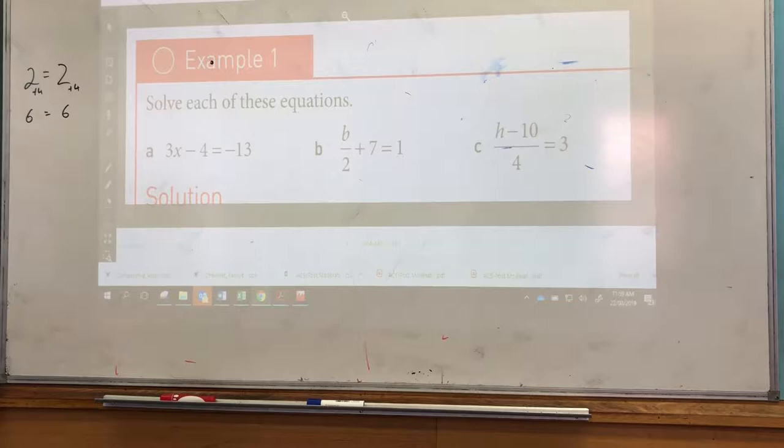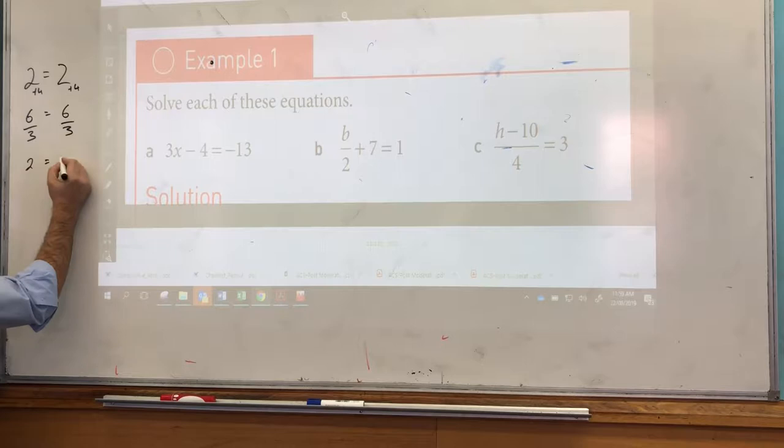Alright, pick another operation that we haven't used. So divide. What are we going to divide by? Pick a number. Three. If we divide both sides by three, we're going to end up with back to two equals two again.